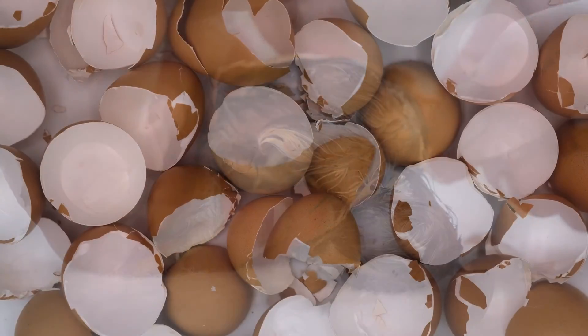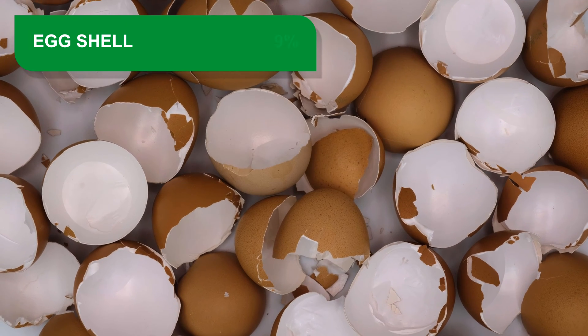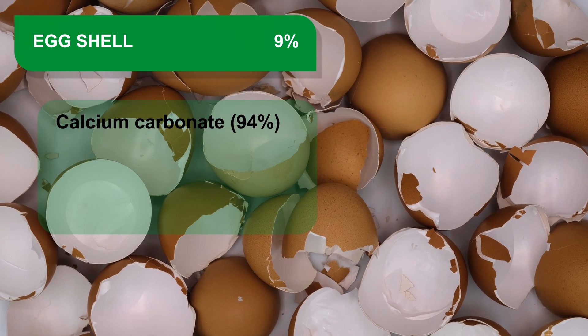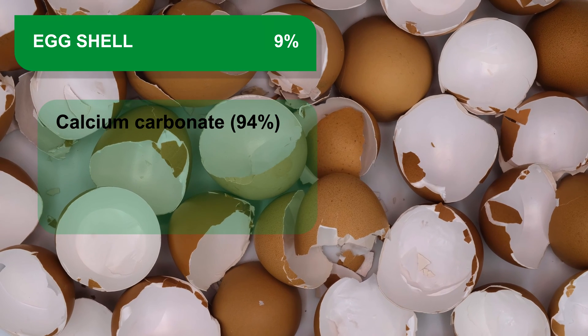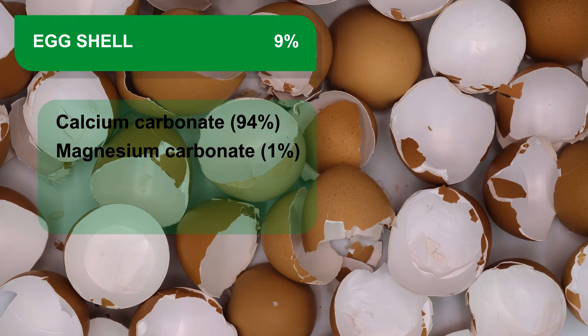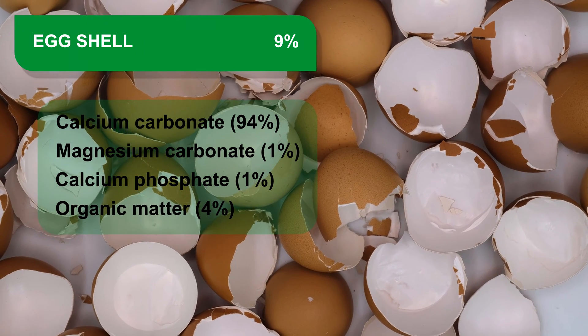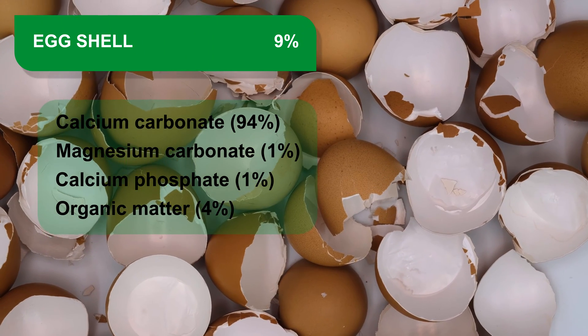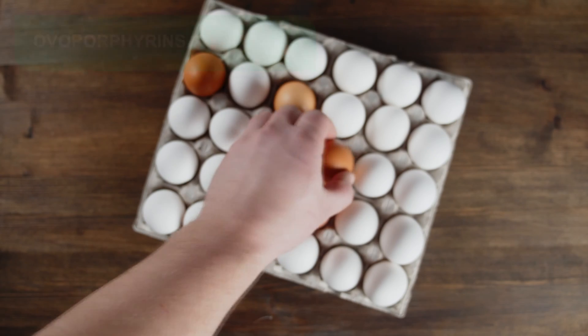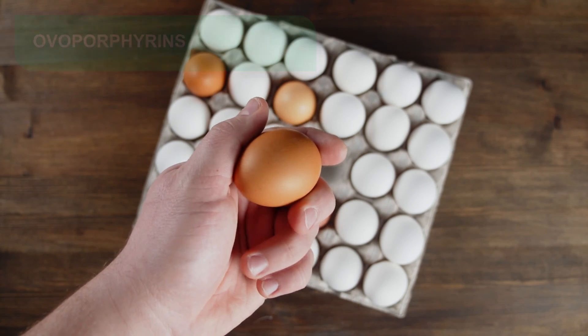Egg structure — eggshell. It represents 9% of the egg weight and is composed of calcium carbonate, magnesium carbonate, calcium phosphate, and organic matter at 4% protein. Its color depends on the presence of a pigment composed of ovoporphyrins linked to the breed of the hen. On its surface, there are numerous pores, between 7,000 and 15,000, that facilitate gas exchange between the inside and outside of the egg.